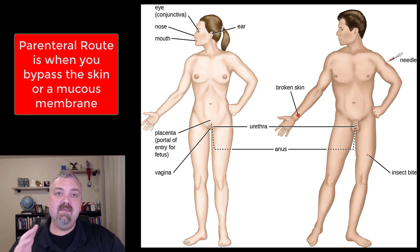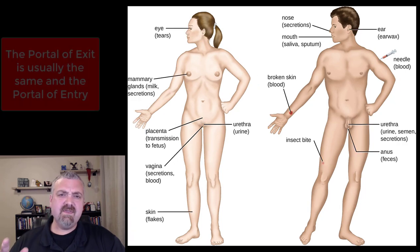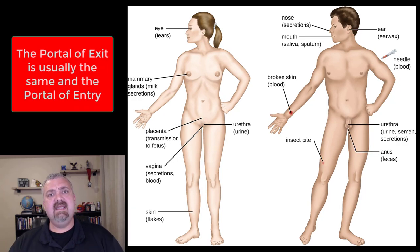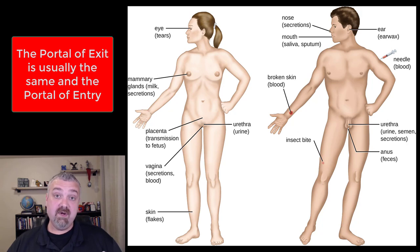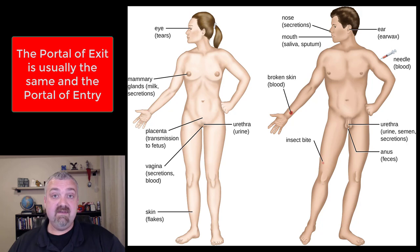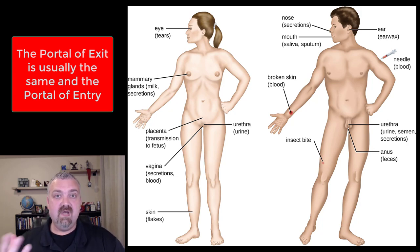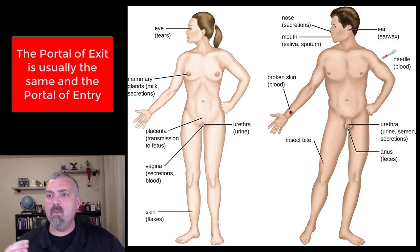So those are the most common portals of entry. The key thing to note about portals of exit is that the portal of exit a microbe uses is almost always the same as the portal of entry. If you cause foodborne illness, you generally come in at the beginning of the GI tract and you leave in fecal material at the end of the GI tract. If you're a respiratory disease, you come in and exit the same system.